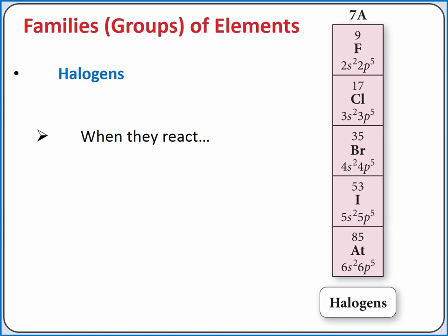Group 7A elements are called halogens. When they react, they tend to accept one electron when forming an ionic compound, because they have five electrons in their outermost P subshell, or they will share electrons to form a covalent compound.